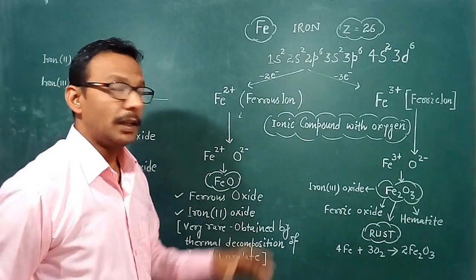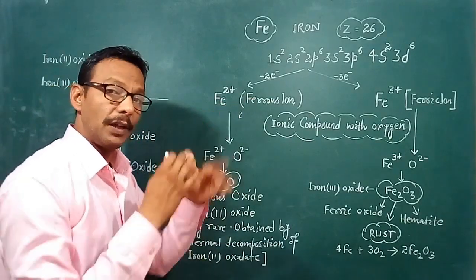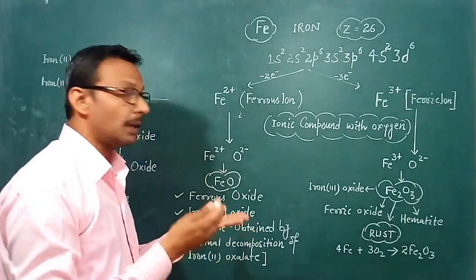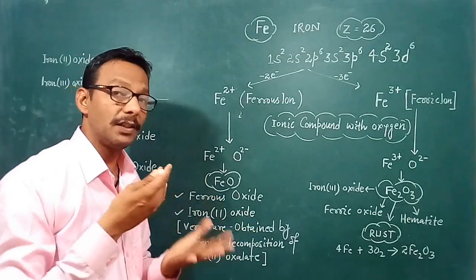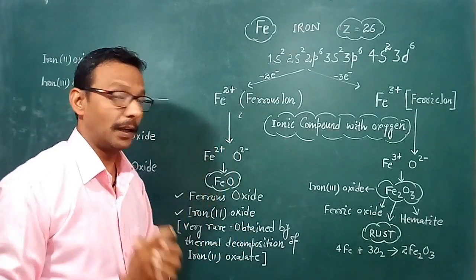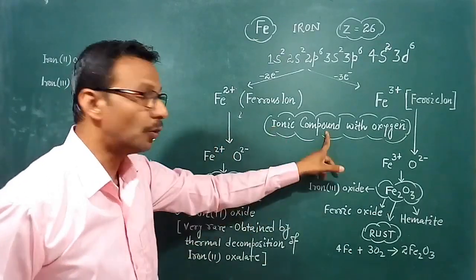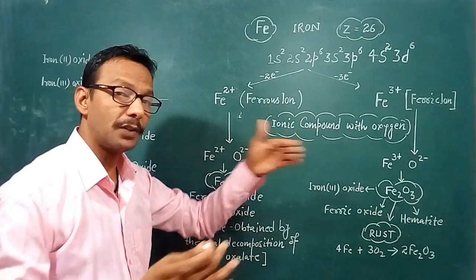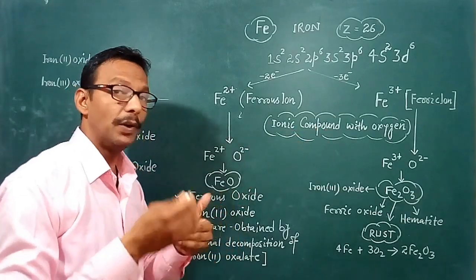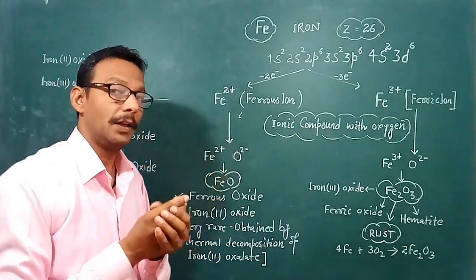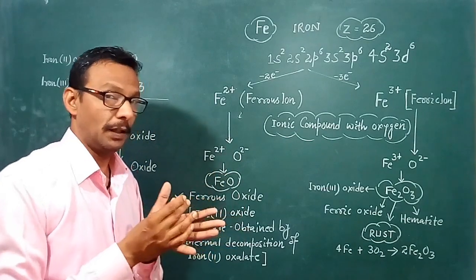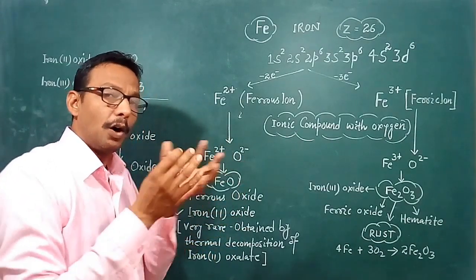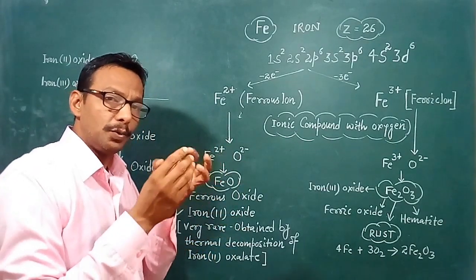We can see that metals react with non-metals. When a metal and a non-metal combine, ionic compounds are formed. In this process, there is an exchange of ions and the two charges cancel each other out.